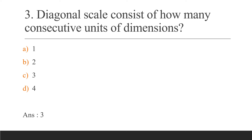Next question: The diagonal scale consists of how many consecutive units of dimension? This is an important question. The diagonal scale has 3 consecutive units of dimensions. The plane scale has 2 units of dimensions.